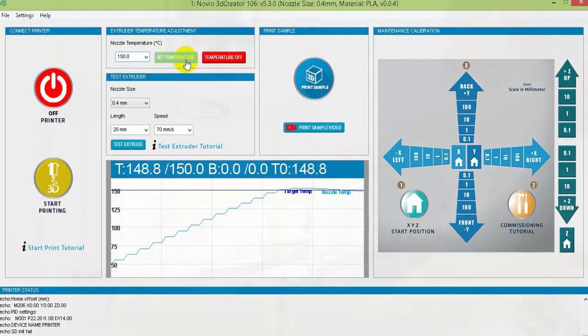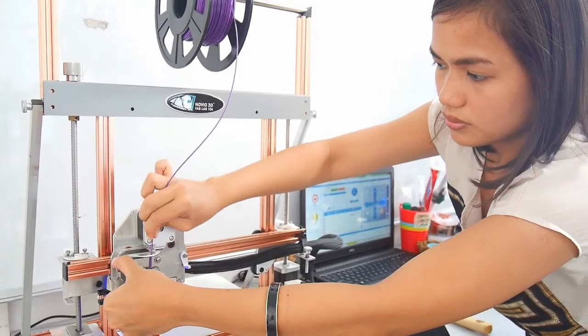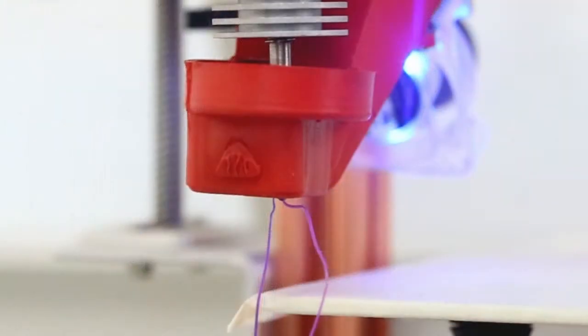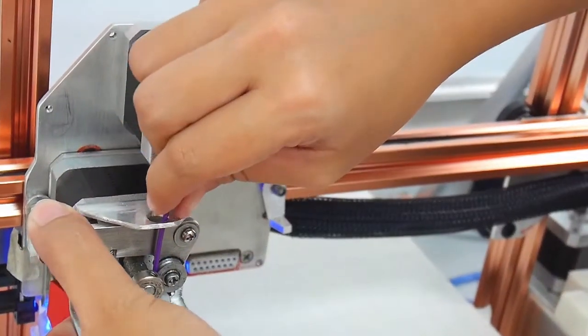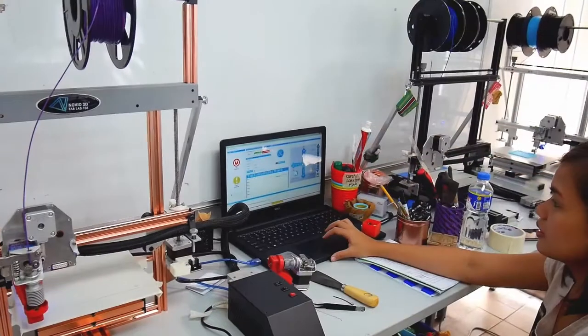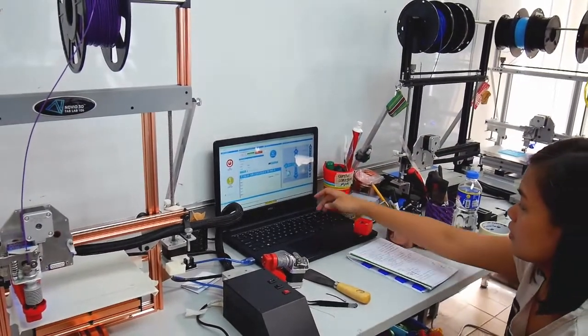That is why it is needed to test extrude first and know the correct temperature for your print materials to achieve a good quality 3D print. This tutorial will teach you how to get the right temperature of the print material to achieve a great 3D print.